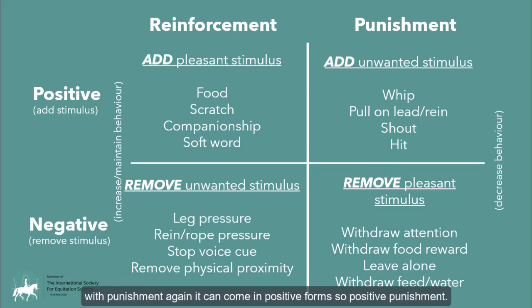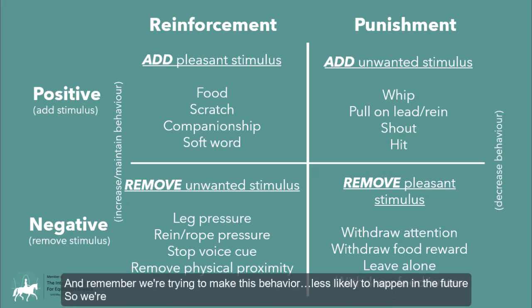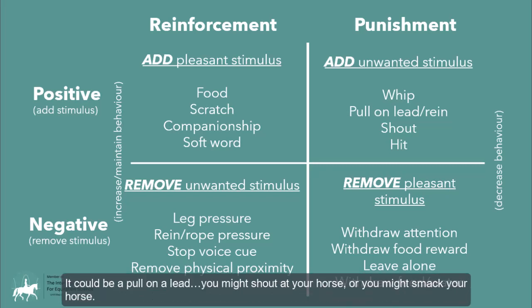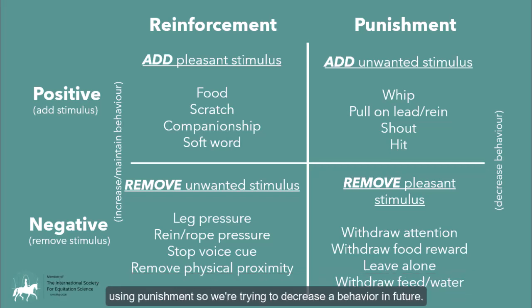With positive punishment, we're trying to make a behavior less likely in the future, so we add something the horse doesn't want. It might be a tap with the whip, a pull on a lead rope, shouting at your horse, or smacking your horse. All of those are things the horse doesn't want — we add them, making it positive punishment, which aims to decrease a behavior in the future.